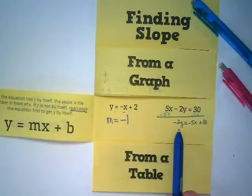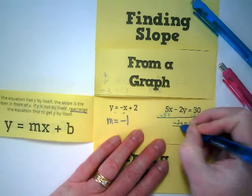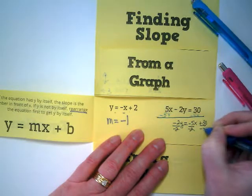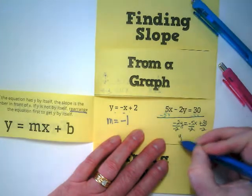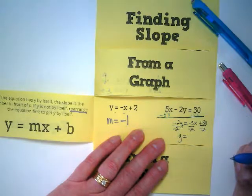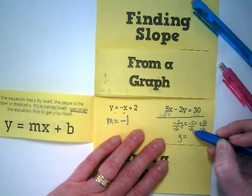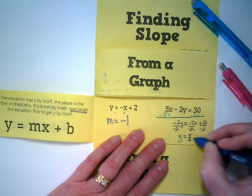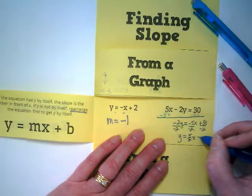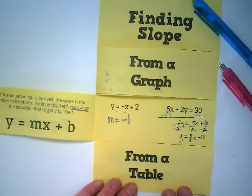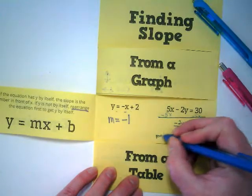What do we need to do to get the y by itself? Divide by what number? Negative 2. Divide by negative 2. Negative 2 divided by negative 2 is a positive invisible 1. That's going to leave us with y equals. Is it okay to have a fraction as our slope? Yeah, sure. Because it's rise over run. I've got negative 5 divided by negative 2. Negative divided by negative is positive. That's going to give me 5 over 2x. And then I've got 30 divided by negative 2, which is negative 15. What is my slope now? 5 over 2. M equals 5 over 2.